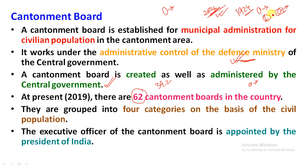The Cantonment Board functions similarly to a municipality. The three main authorities are: the council, the standing committee, and the chief executive officer. These are the same as the municipal corporation structure we have discussed.